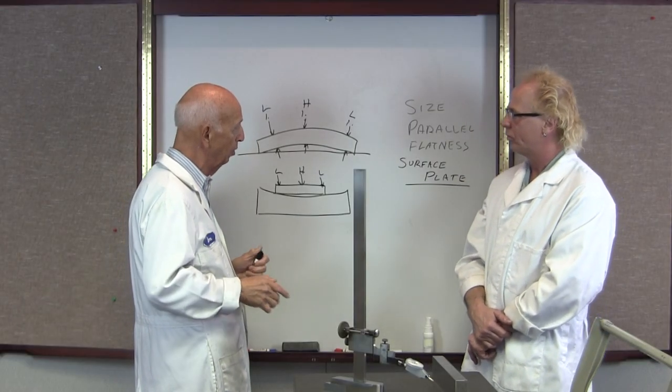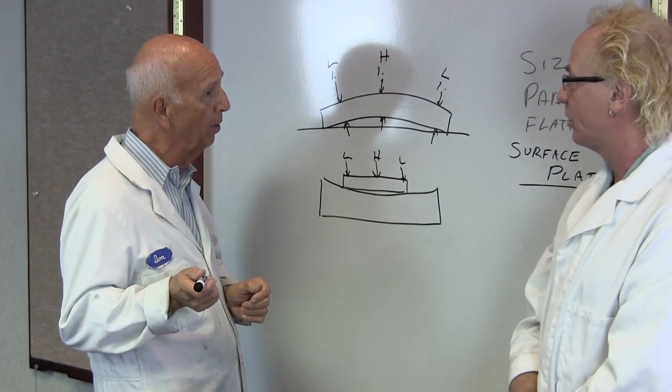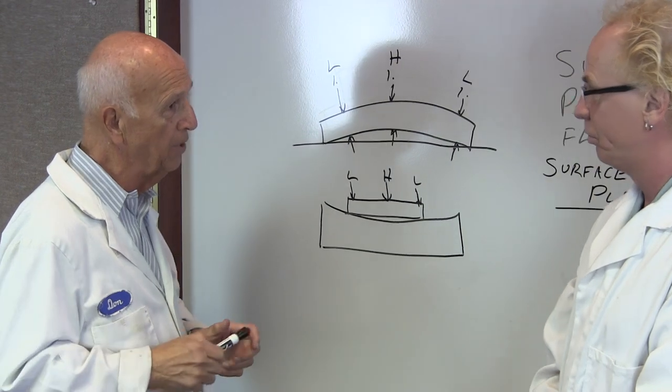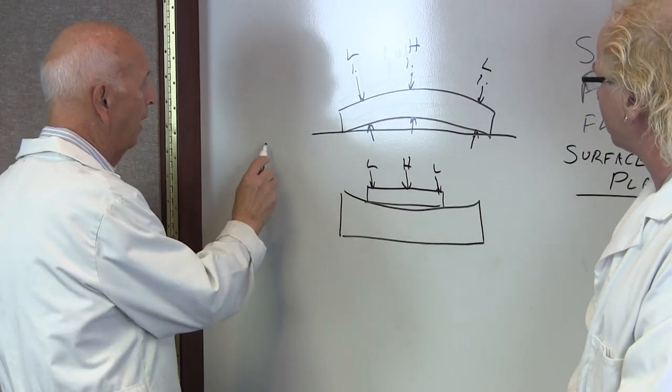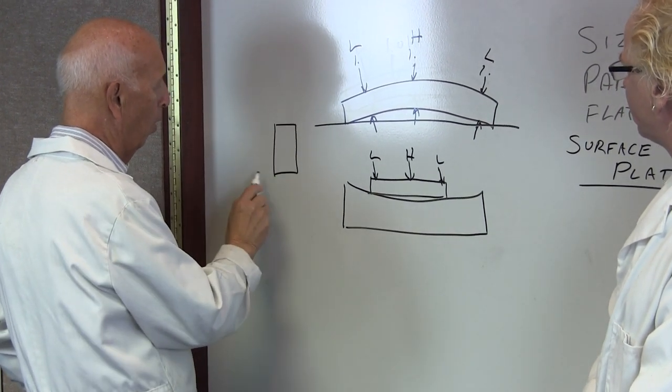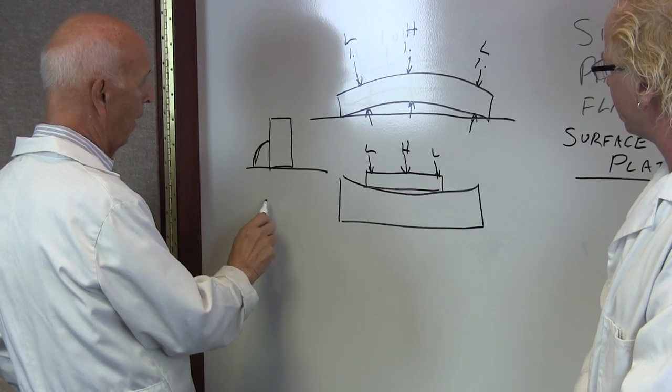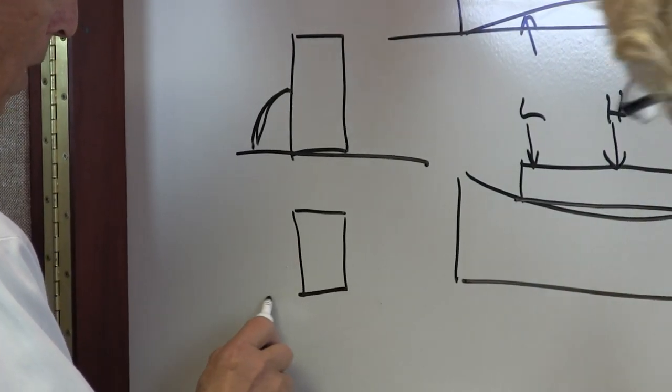So this is really critical, and I can't emphasize this enough. When you're dealing with close tolerances like we're talking about here, we're talking about a tenth or two. This is not easy. To make a parallel within a couple of tenths and to make it parallel and on size is not easy.